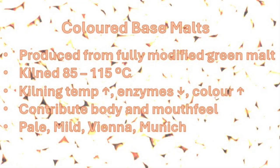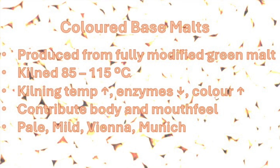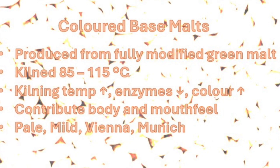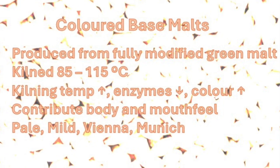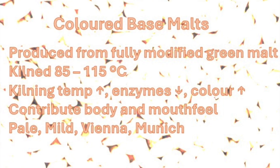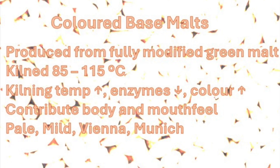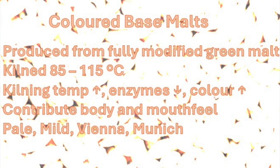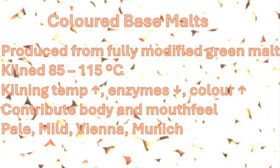Next, we have so-called color base malts. They are produced from fully modified green malts, and the final kilning temperatures are in the range between 85 and 115°C, or 185 and 240°F. It is worth mentioning that as the kilning temperature increases, the enzyme content of the malt decreases while the color and flavor both increase. These malts also contribute more body and mouthfeel to the final beer.